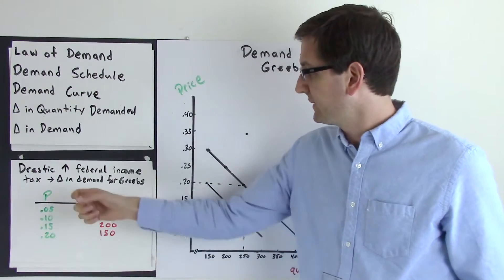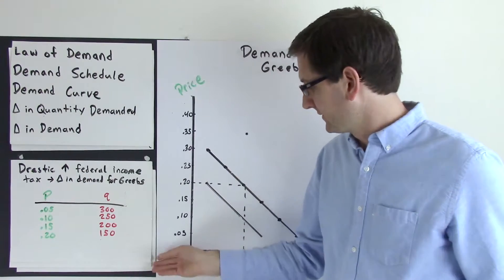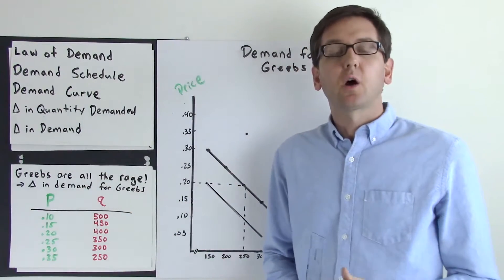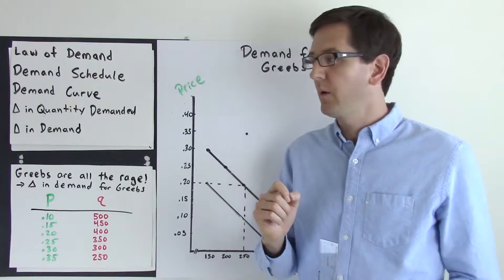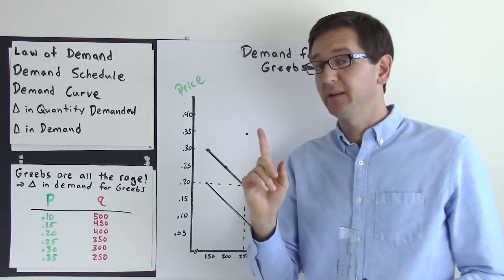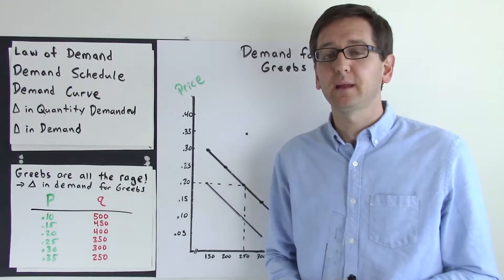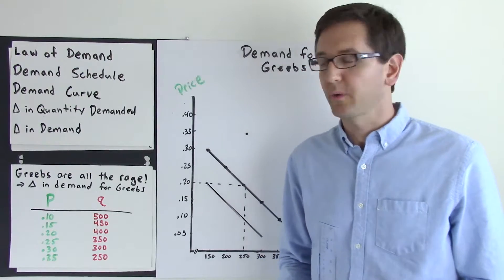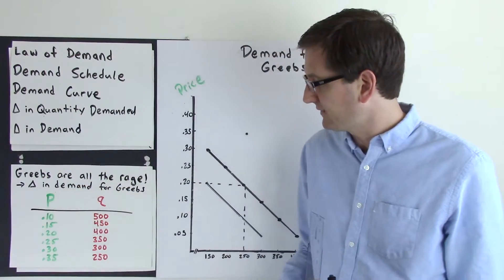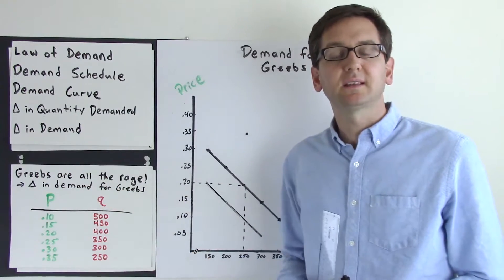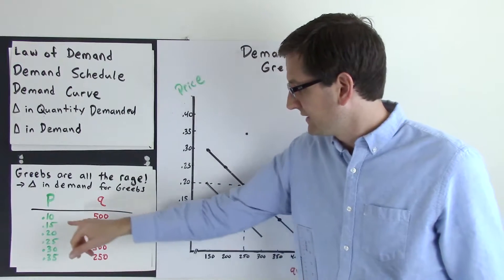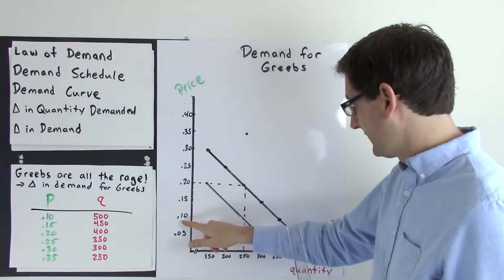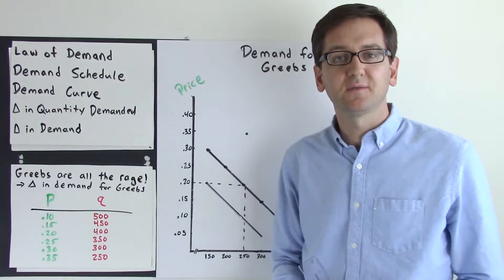Demand has specifically decreased because of this federal income tax. Now let's look at a different scenario. Let's say that Grebes are all the rage — celebrities online are talking about how amazing Grebes are, everybody says you've got to get one, in fact you need at least 10 Grebes or you're not cool. That's going to have a significant impact on demand for Grebes and create a new demand schedule. For example, at 10 cents, the quantity demanded is now 500 million Grebes, whereas before at 10 cents our quantity demanded was 350 million.